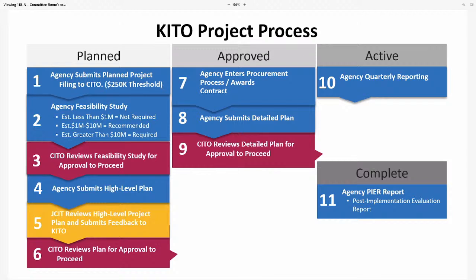In the quarterly report, I'll go through a summary of projects that changed phase and highlight any active projects in alert status. Once a project is completed, we reach step 11 — the project is closed out and a document called the PIER, the Post Implementation Evaluation Report, is received, which officially closes the process. Any questions?